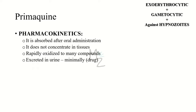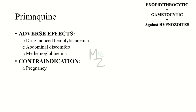Pharmacokinetics of primaquine: it is well absorbed after oral administration and is not concentrated in the tissues. It is rapidly oxidized to many compounds, primarily the deaminated drug, and is minimally excreted in urine. Adverse effects include drug-induced hemolytic anemia, abdominal discomfort, and methemoglobinemia. It is prohibited in pregnancy.